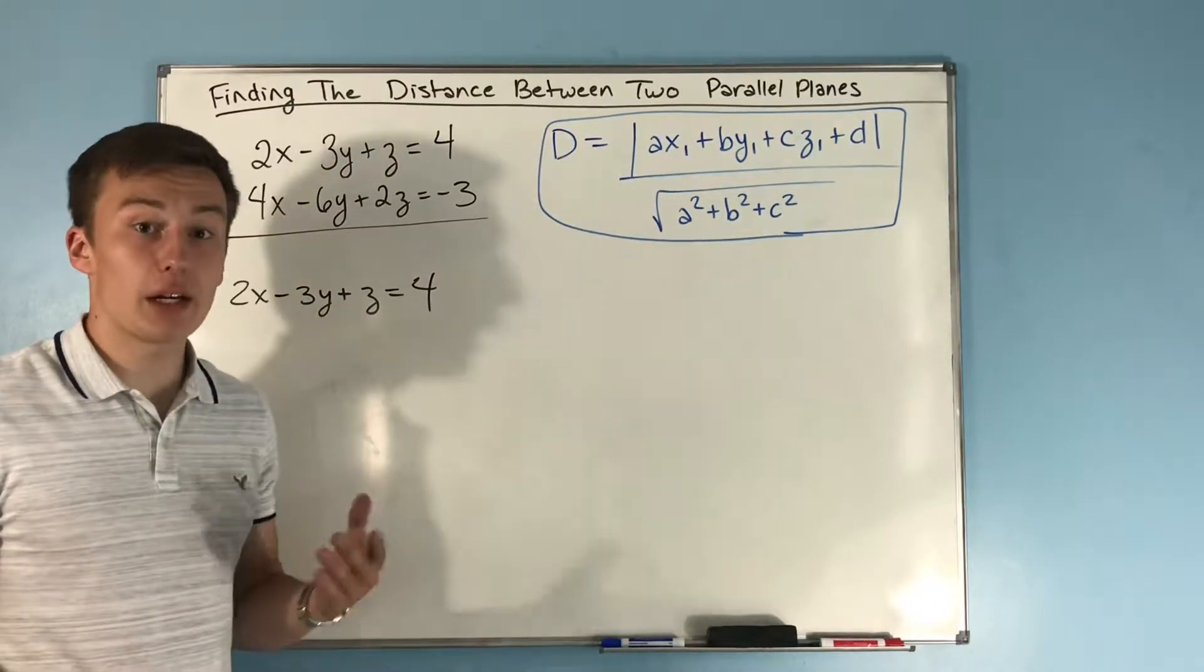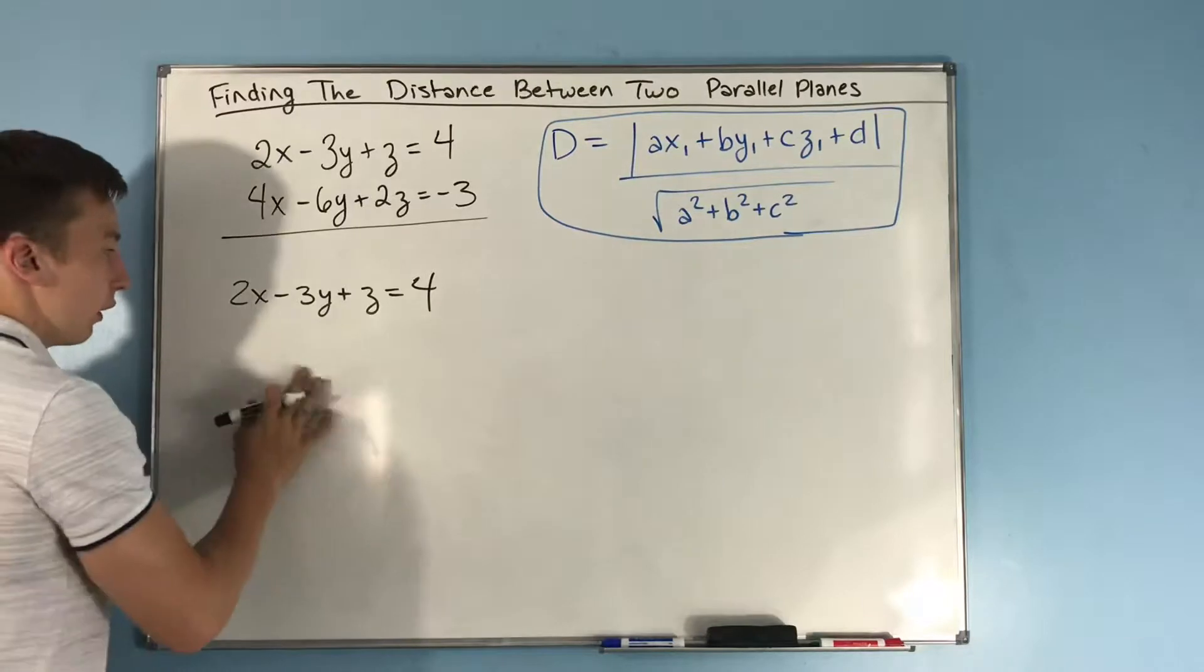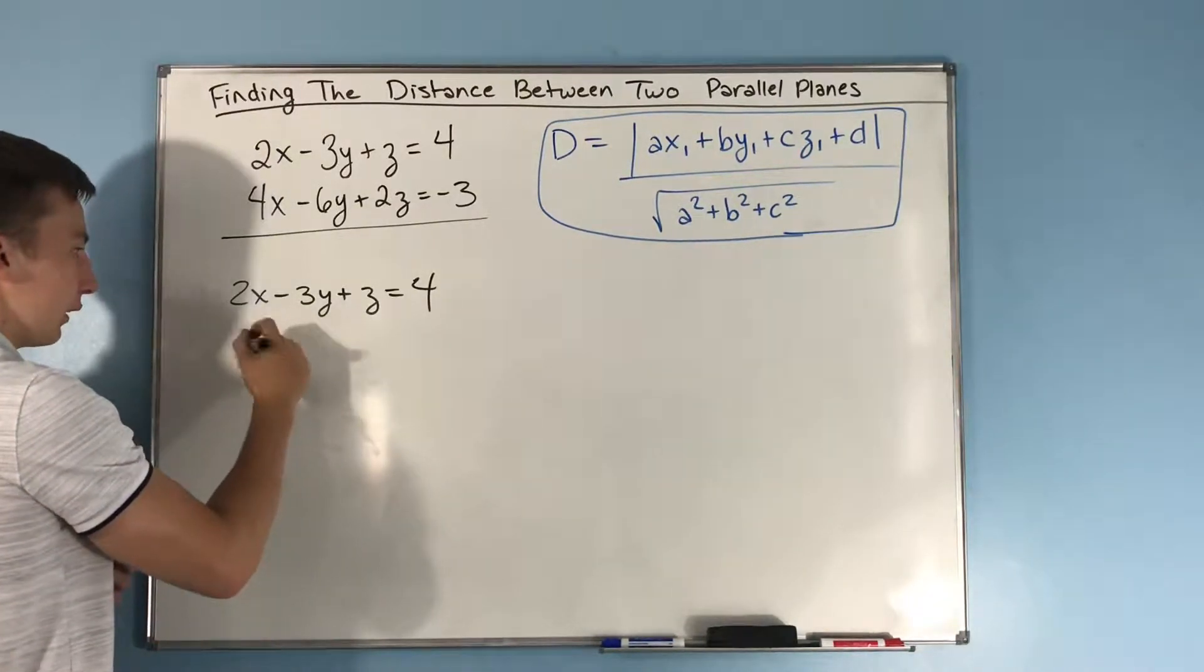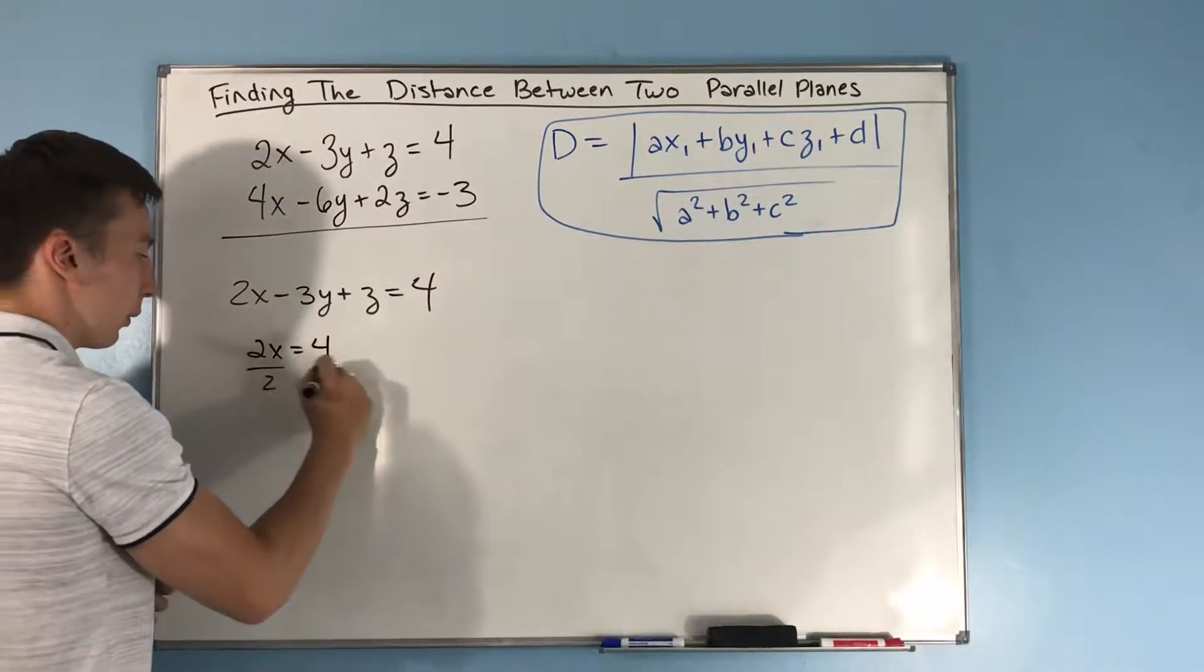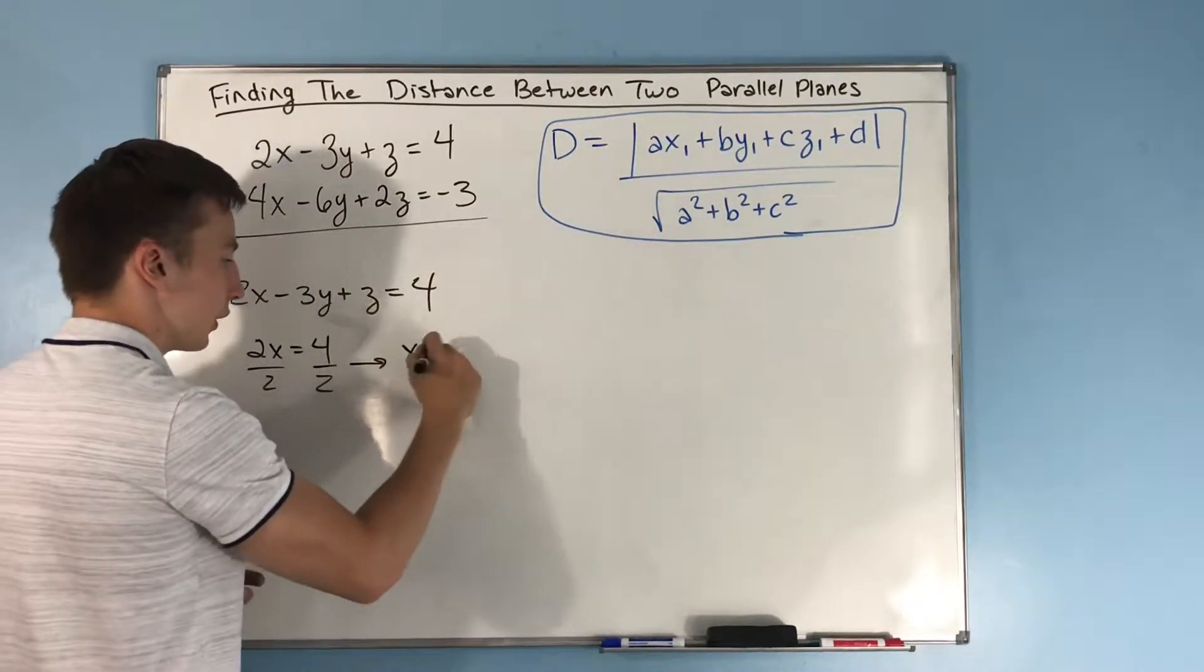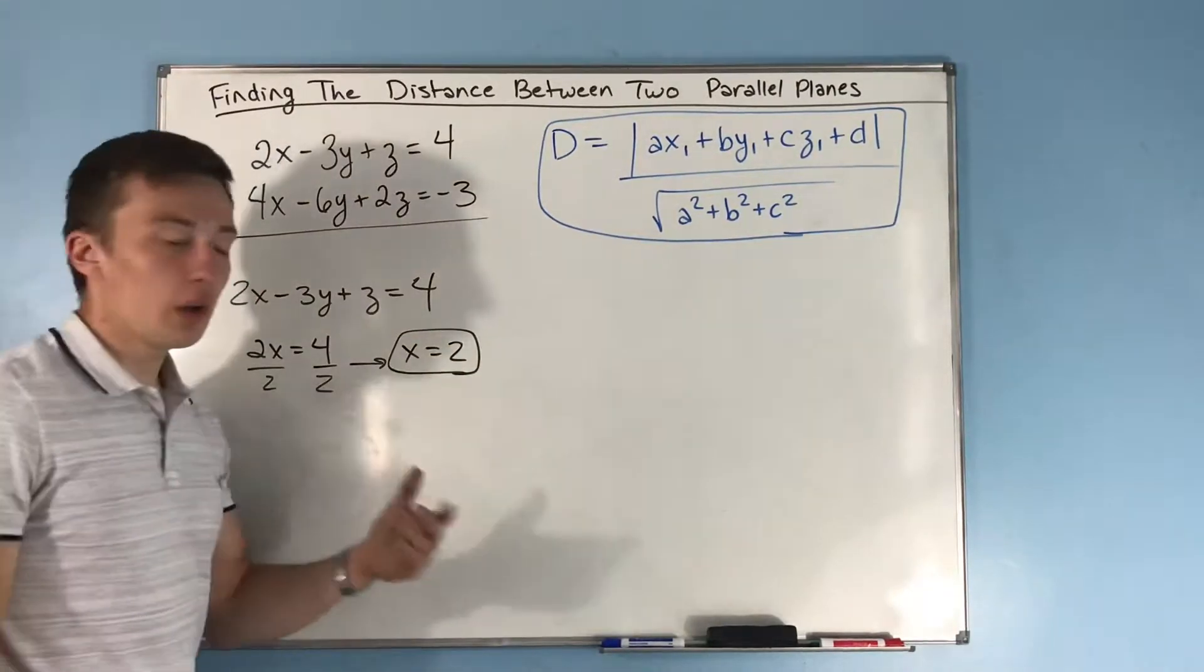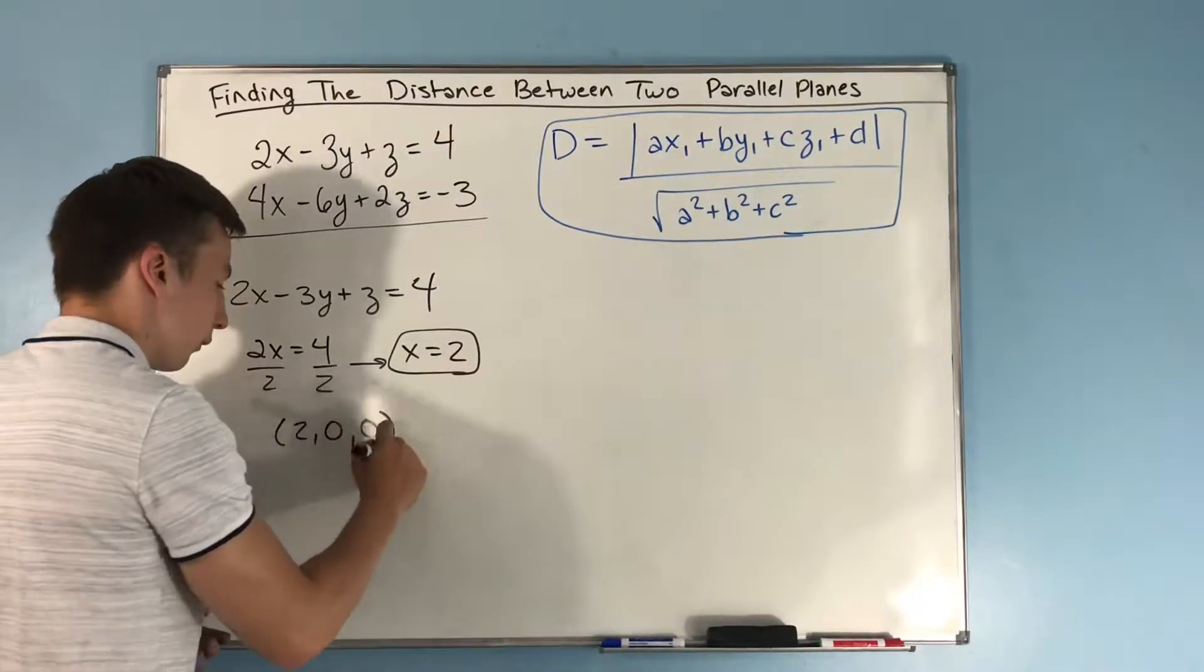It's really easy to find a point on the x-axis because we can make y and z zero and have just 2x = 4. Divide by 2 on both sides, and you get x = 2. So you end up with the point (2, 0, 0).